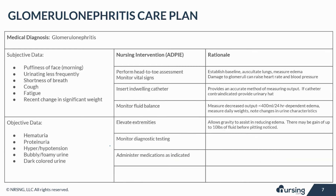Monitor diagnostic testing, including electrolyte levels — calcium, sodium, magnesium, and potassium. Electrolyte imbalances can lead to muscle weakness or spasticity and affect cardiac output.